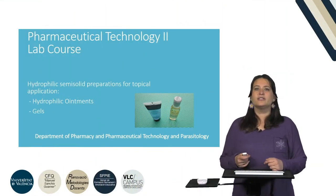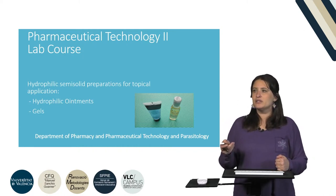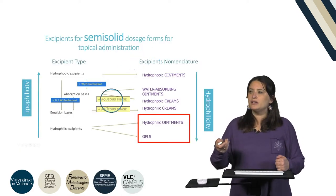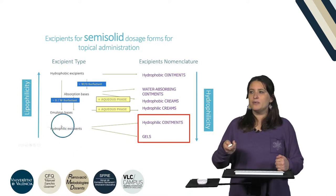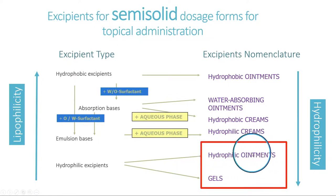In this video we are going to learn the last formulations that we can prepare for topical use, which are the hydrophilic ointments and the gels. We are now in the lowest part of our schema, talking about the most hydrophilic excipients. They are mainly composed of only one phase, which is hydrophilic, and we can have either hydrophilic ointments or gels, which are those prepared with high amounts of water and a viscosity enhancer.